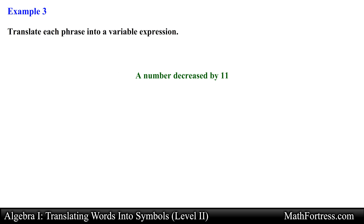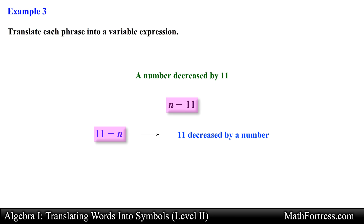A number decreased by 11. This phrase represents a subtraction between two numbers because of the keyword 'decreased,' so this phrase translates to n minus 11. Many students have a hard time with phrases that involve subtraction because they are not sure which numbers are being subtracted from each other. For example, the variable expression 11 minus n is read '11 decreased by a number.' These two expressions are completely different because they yield different results when you substitute a random number. So be extra careful when translating phrases involving subtraction — make sure you are subtracting the numbers in the correct order.